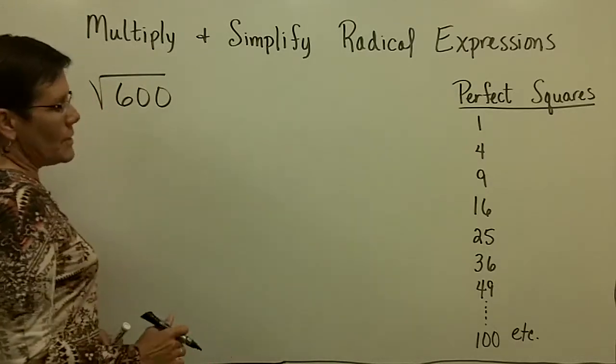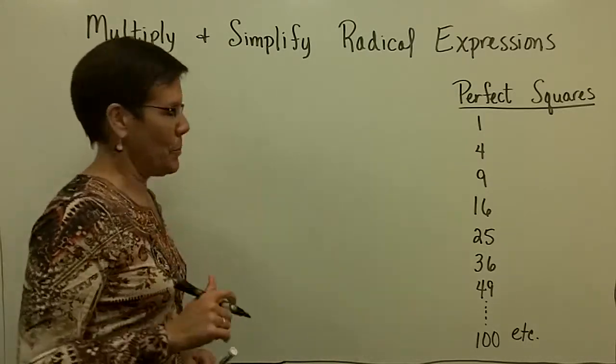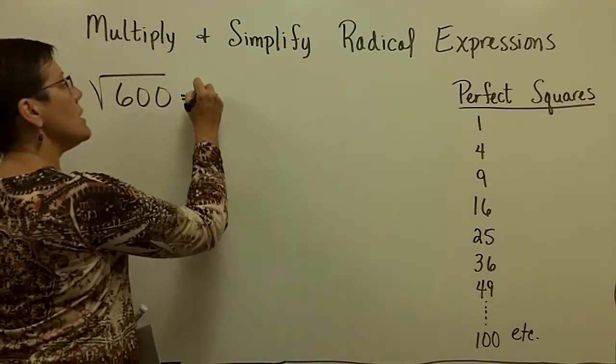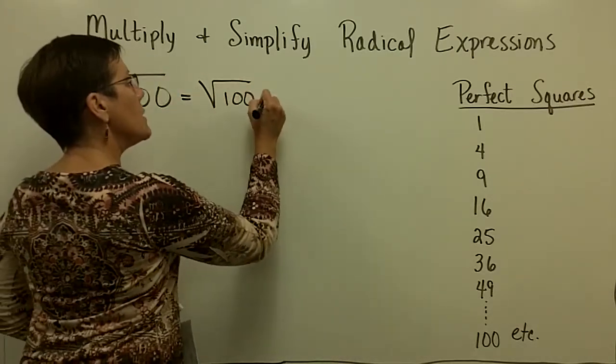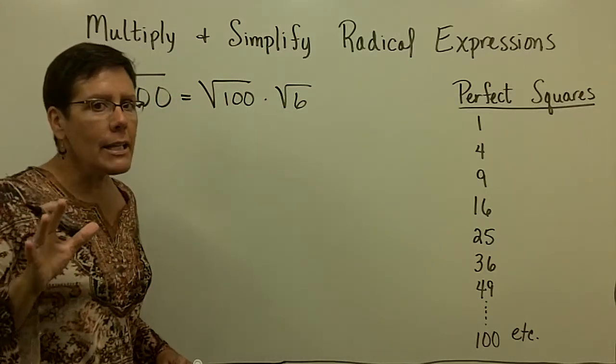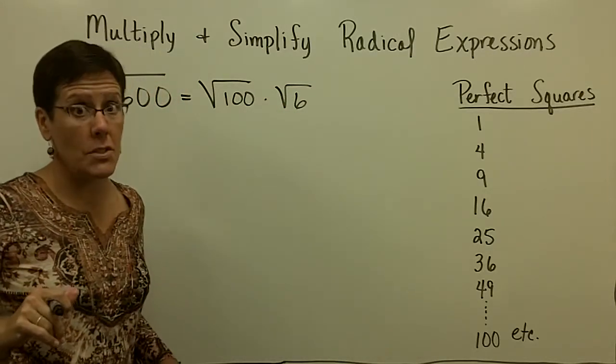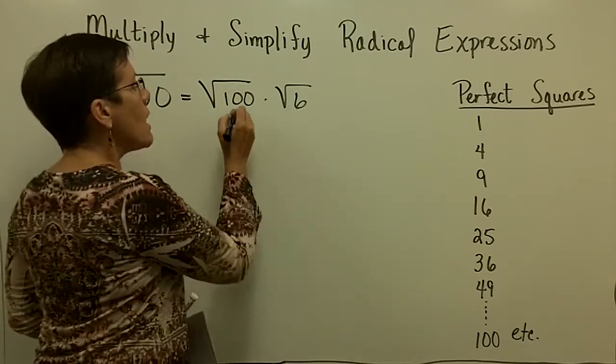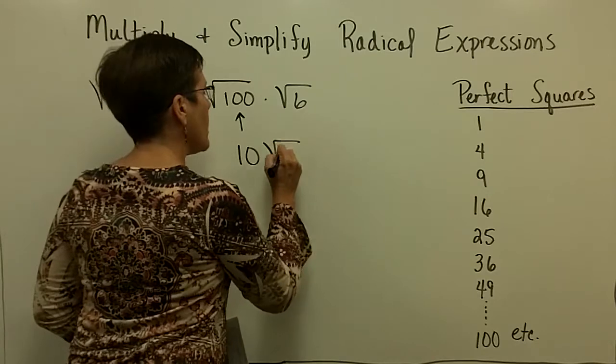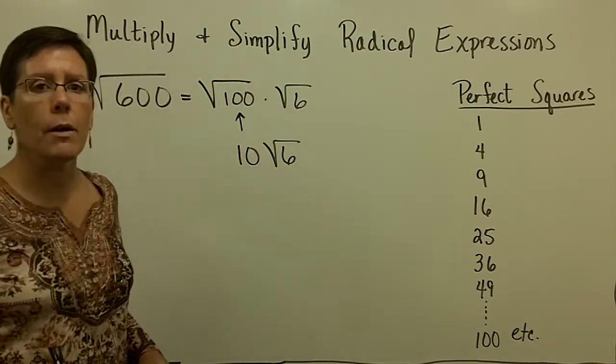So, again, let's go with an easy approach here at first. I go right to that bottom number in the list, and I say, geez, 100 times 6 is 600. And I didn't have to think of all the prime factors of 600, which is a bit of work. And then I would say to myself, well, I know that the square root of 100 is 10. And I'm all done. I've simplified that radical expression.